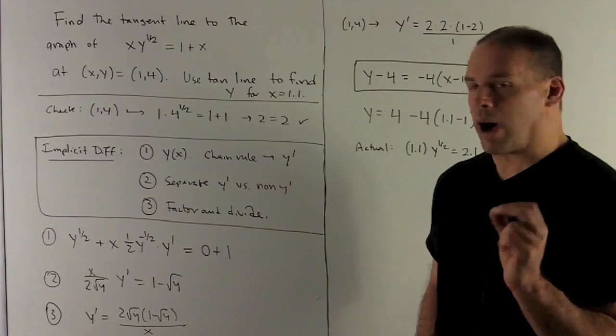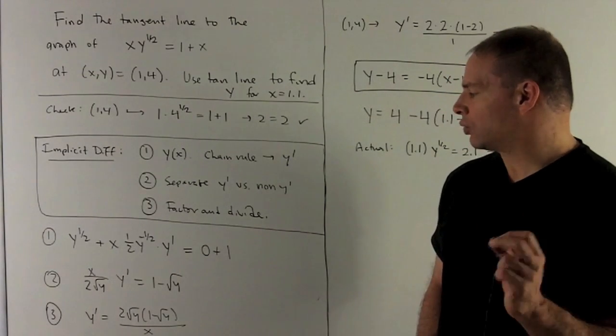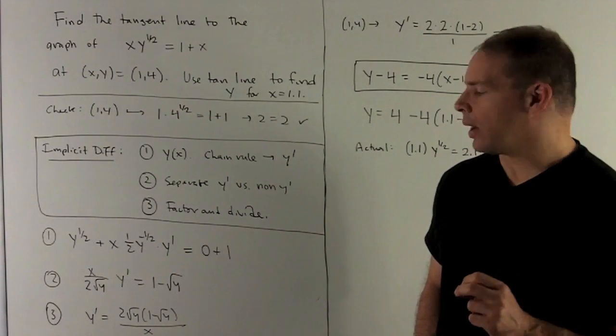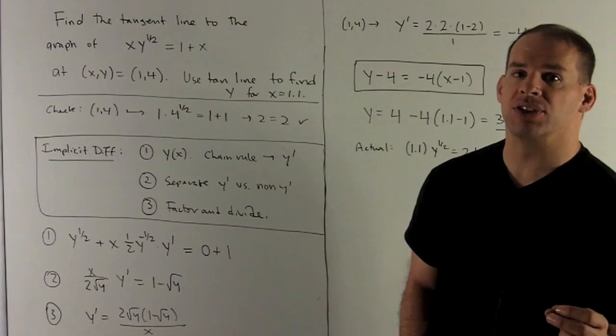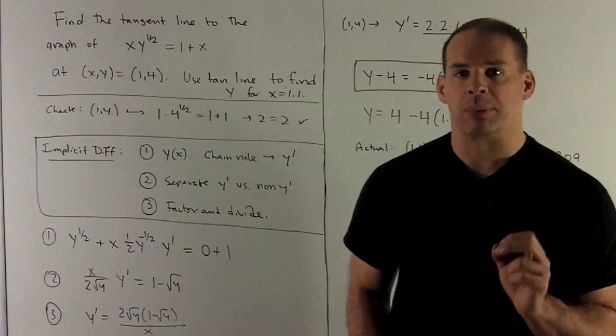And now I'm just going to divide by what's in front of our y'. So once I do that, y' is isolated as 2√y(1-√y)/x. So that's y'.